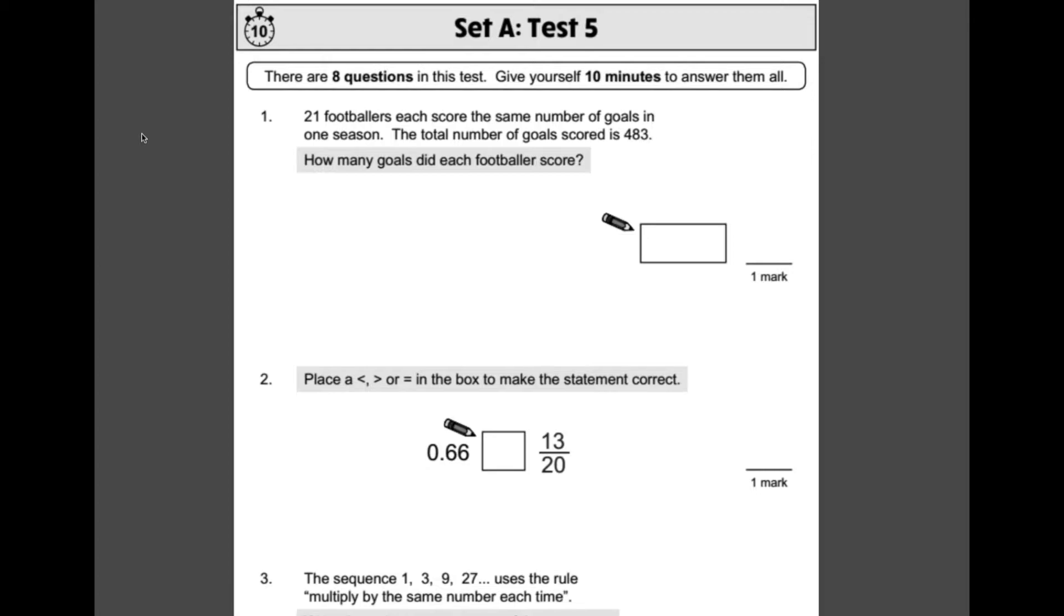Number 1. 21 footballers each score the same number of goals in one season. The total number of goals scored is 483. How many goals did each footballer score? Because the footballers all had the same number of goals, we can divide 483 by 21. We can use the bus stop method here. How many 21s go into 4? The answer is 0. How many 21s go into 48? That would be 2, remainder 6. How many 21s go into 63? That would be 3. 3 times 21 makes 63, so our answer is 23.